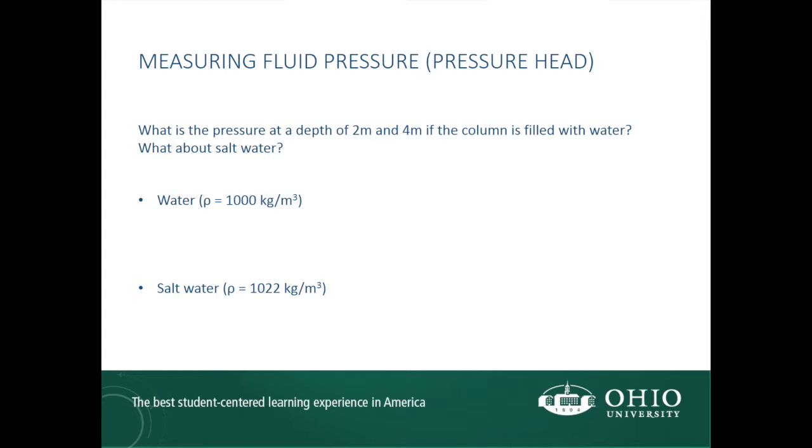Let's apply the hydrostatic pressure equation to solve for the pressure at two points in a water column. We want to know the pressure at depths of 2 meters and 4 meters for a column of water and a column of salt water. We know the density of water is 1000 kg per cubic meter, and the density of salt water is 1022 kg per cubic meter. We'll start by calculating the pressure at a depth of 2 meters in the water column. We know p equals rho gh, so we can plug in our values and we get the pressure to be 19,620 Pa.